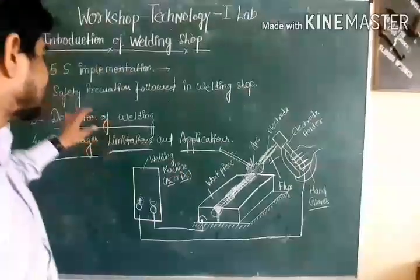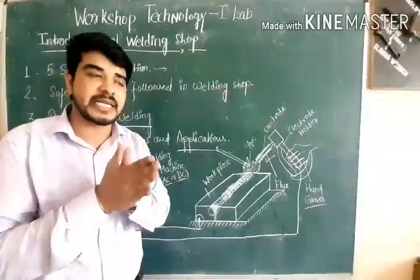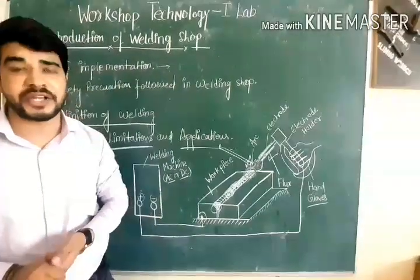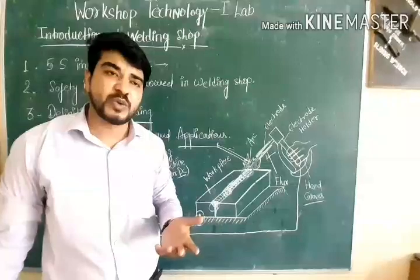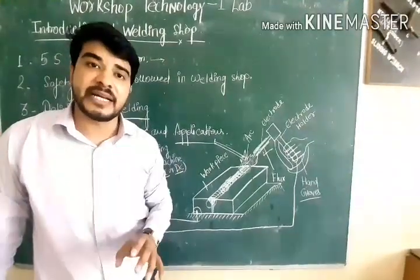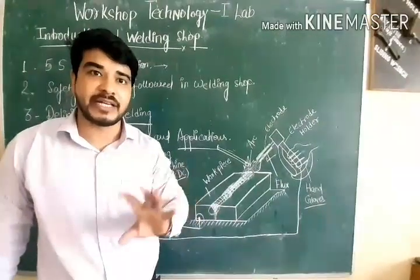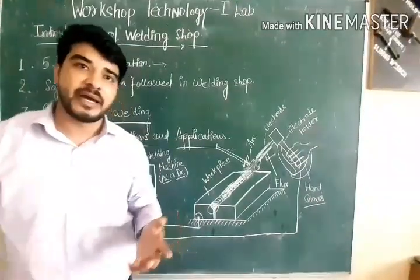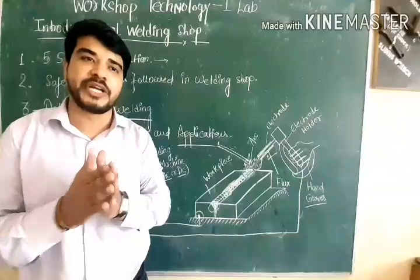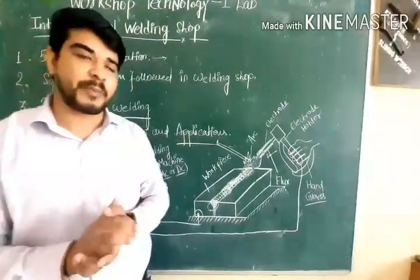The second topic is safety precautions followed in the welding shop. When we enter the welding shop and start welding, we must follow some safety precautions. First, welding should be done at a well-ventilated place — wherever we are welding, there should be proper air circulation, like an exhaust, a proper window, or an open door, so that harmful gases and heat generated can flow out properly.